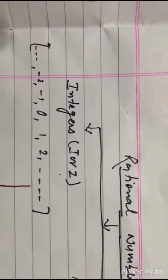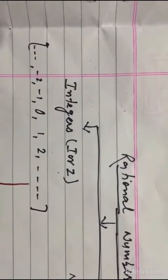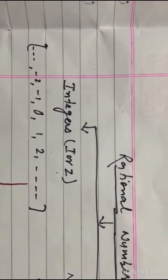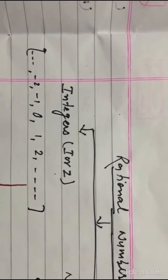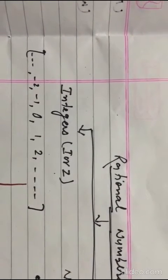Integers consist of 0, 1, 2, dot dot dot up to infinity, minus 1, minus 2, dot dot dot up to negative infinity.